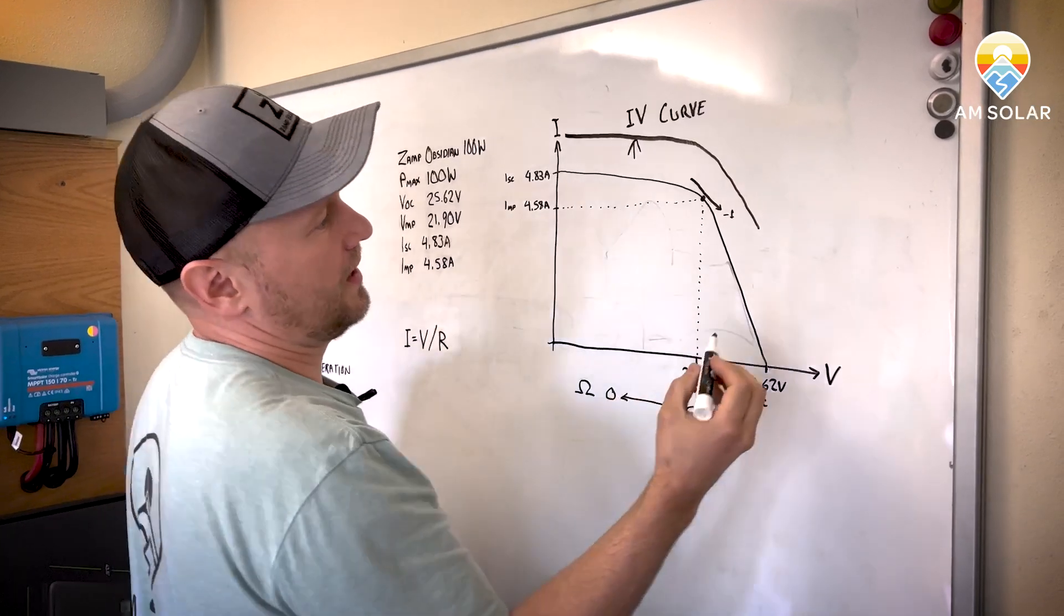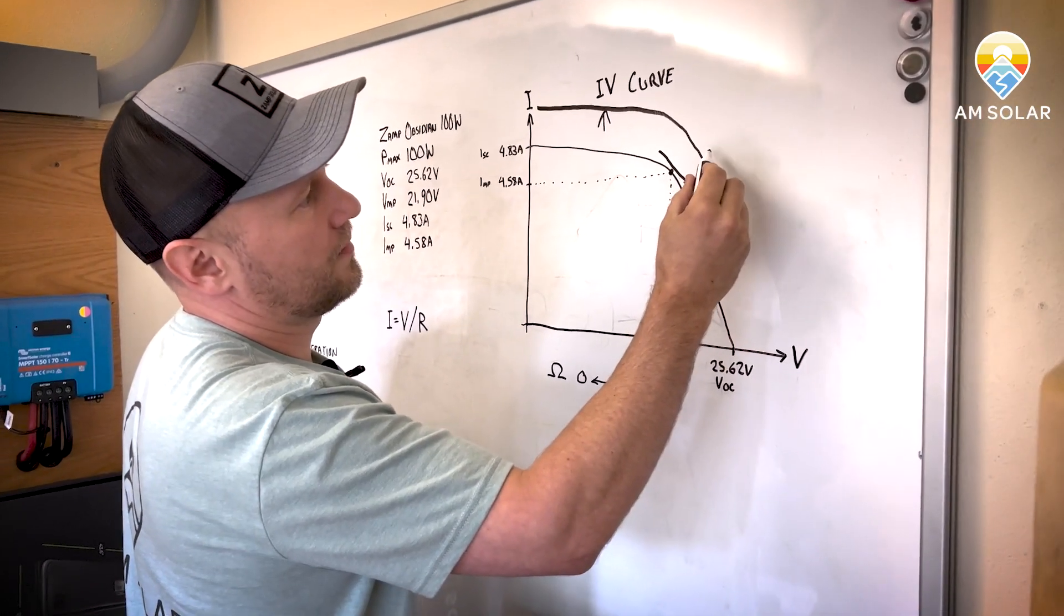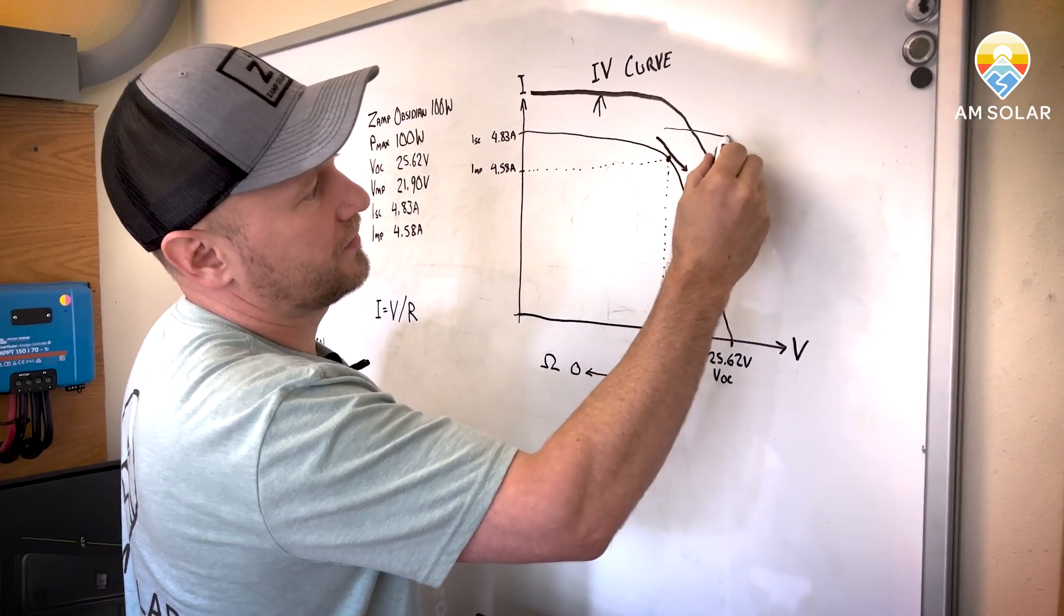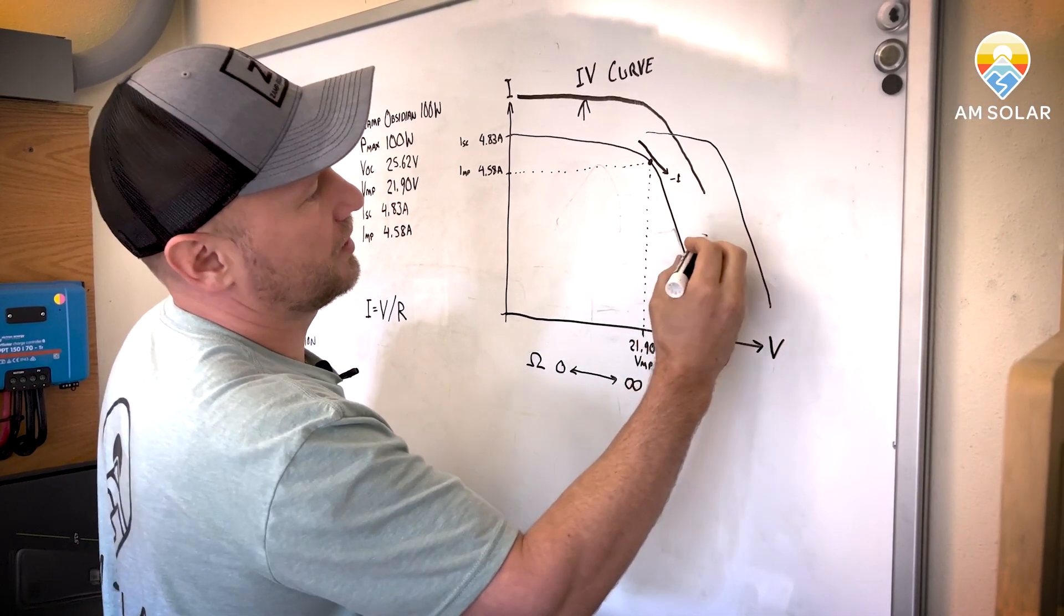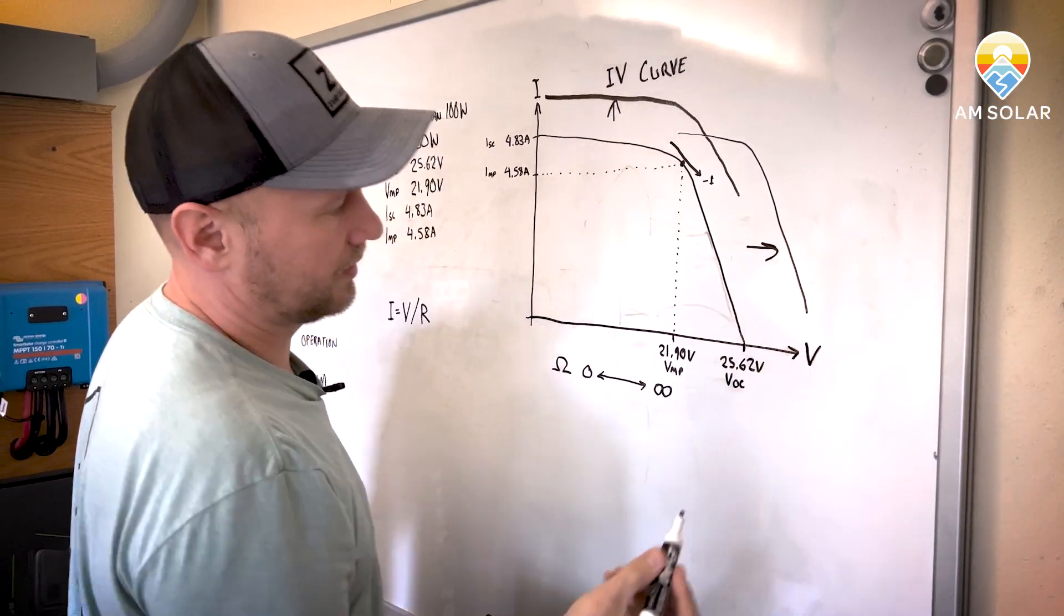And if you had, like it was a really cold day, the curve would shift to the right. When it gets colder, it goes to the right. So on a really bright, cold day, it's possible that you could get more than 100 watts out of the panel.